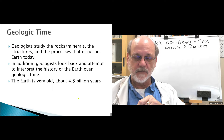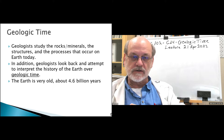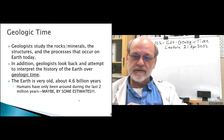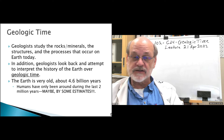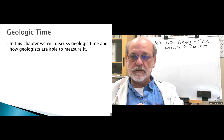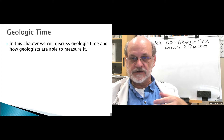It's now generally believed that the earth is very old, on the order of 4.6 billion years. Hominids — human-like creatures — have inhabited the earth for a couple of million years by some estimates. We're going to look at how geologic time is measured and how geologists arrived at these estimates and the sequences of things that happen in and on the earth.